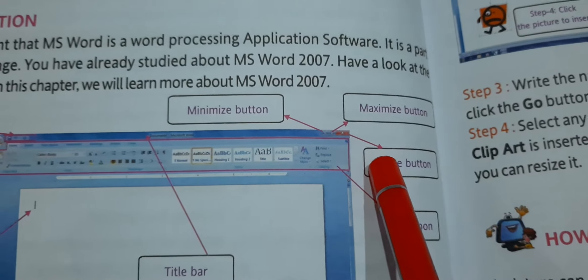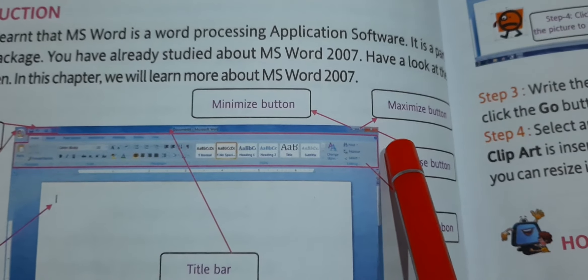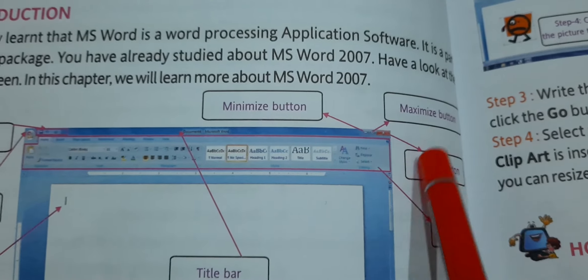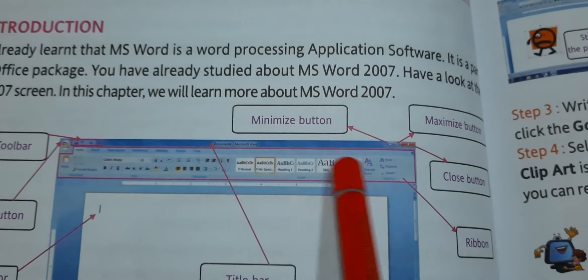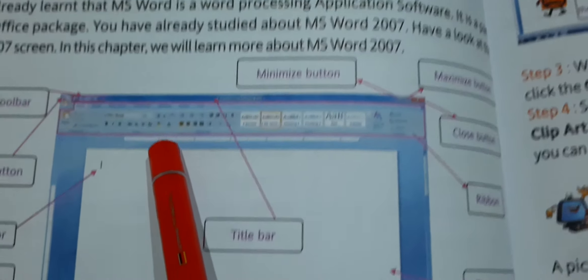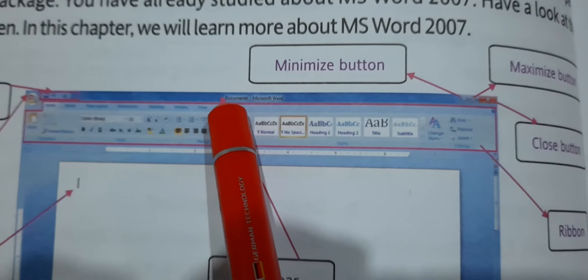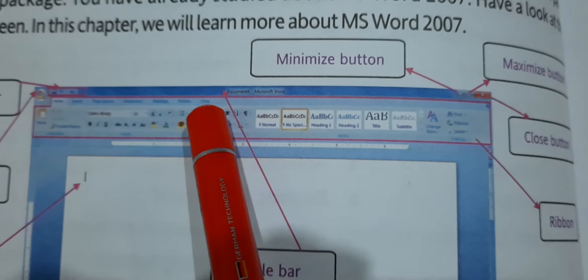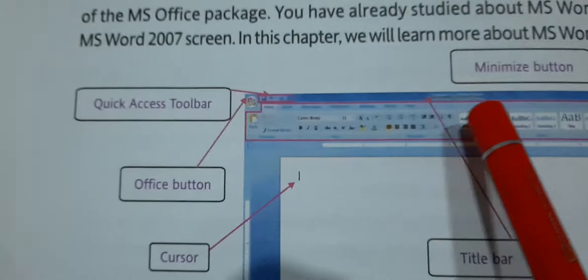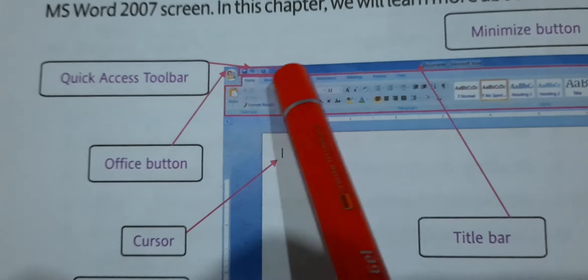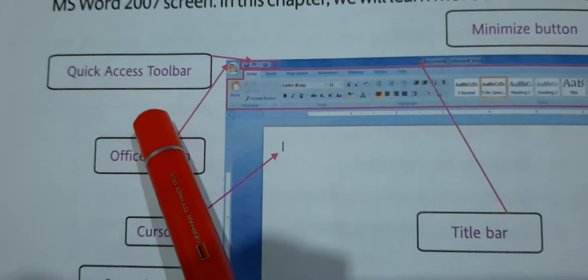So now let's see from top to bottom. This is the minimize button. You can see all three buttons — minimize, maximize, and close. Then this whole area is the ribbon, in which different tabs and groups are there. Then this is the title bar, where you can see the title of the document. Right now it is showing Document 1 because it is not saved. When the document is saved, it shows the title here along with the application's name. Then this is the Quick Access Toolbar, where we can quickly access various commands.